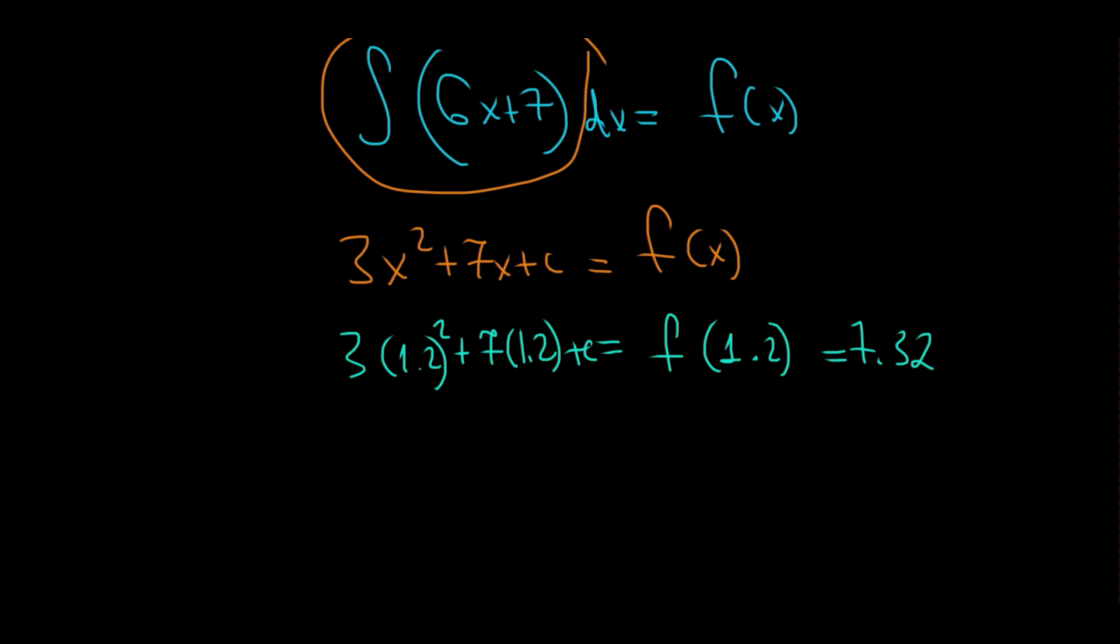Then, because I can use a calculator, I'm just gonna use numerical solve to put this equation equals to 7.32. I'm just gonna write it here, 7.32. In my numerical solve, I would get the constant to be equal to minus 5.4.